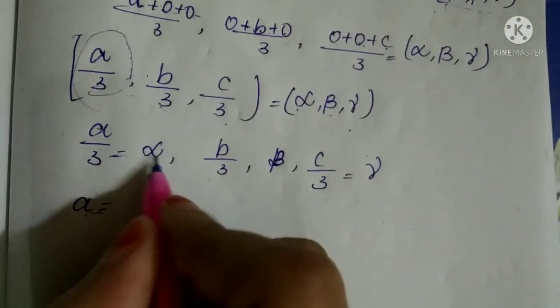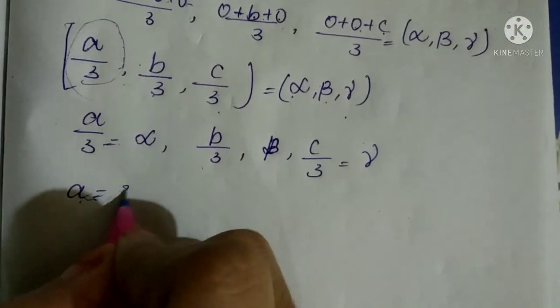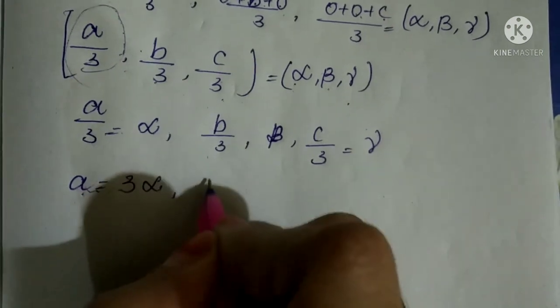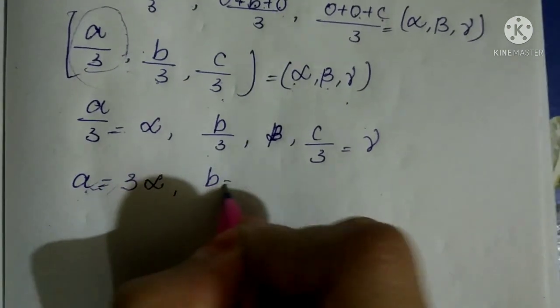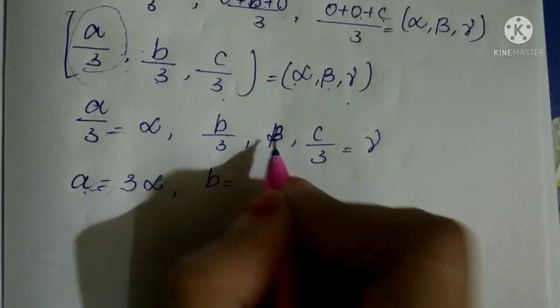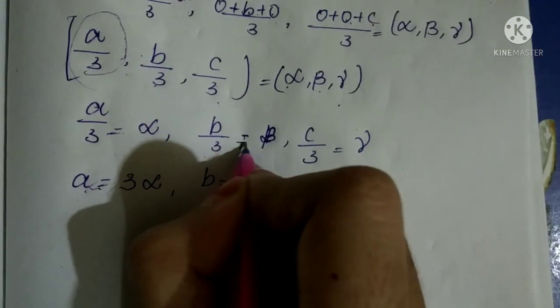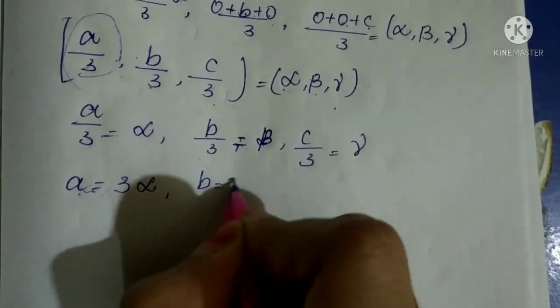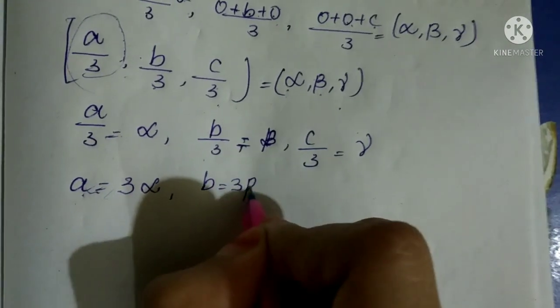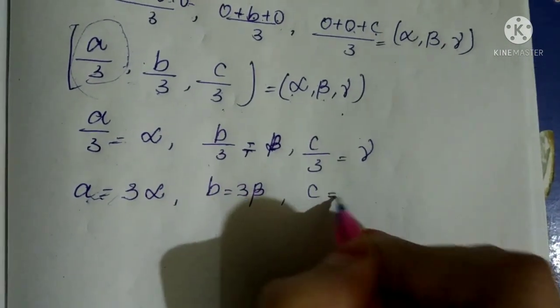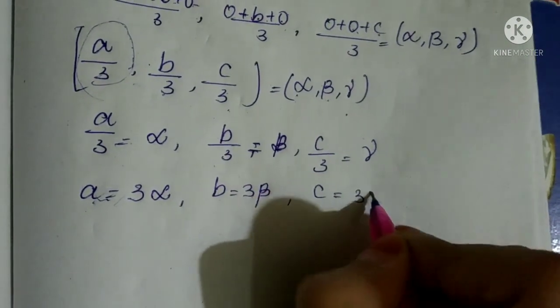Therefore, a = 3α, b = 3β, c = 3γ. We will now substitute these values into equation 1.